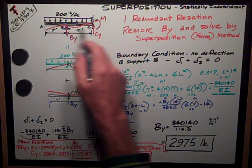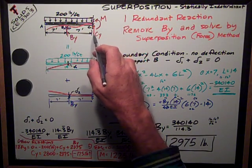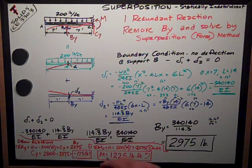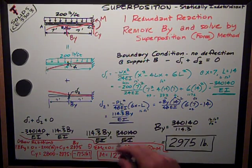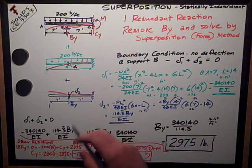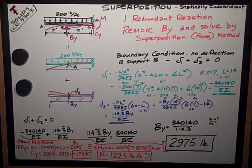These points are A, B, and C, the reaction at BY, and I have a reaction and a moment at the fixed support over here on the right end. So obviously I have one redundant reaction, which means I have one more unknown than I have equations of equilibrium to solve it by.